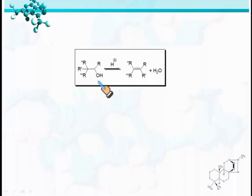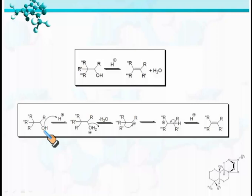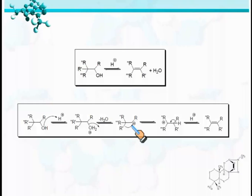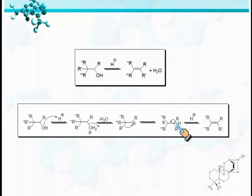When this alcohol is treated with acid, it forms the following alkene. The mechanism is as follows: first, the OH group undergoes protonation and forms a compound which undergoes loss of water, generating a secondary carbocation. This then undergoes rearrangement by migration of an alkyl group to the electron-deficient carbon, generating a relatively more stable tertiary carbocation, which then undergoes loss of a proton to generate the alkene.